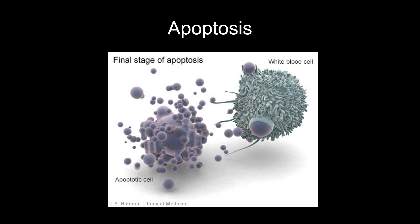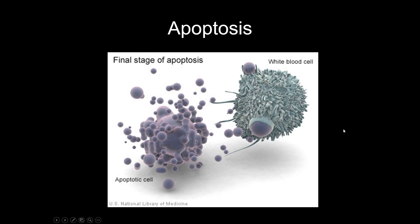Apoptosis is programmed cell death. Our immune system consists of cells that can murder virus-infected cells so they stop releasing viral particles — that's how our immune system handles viruses. We don't have restriction enzymes or CRISPR like bacteria; instead, we have a whole functional immune system designed to kill virus-infected cells.